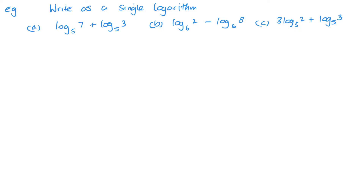Let's have a look at a few examples. First example: write as a single logarithm. We want to use the multiplication law here — we've got the same base and they are added. So this becomes a log of seven times three, which gives us log of 21 to the base 5.